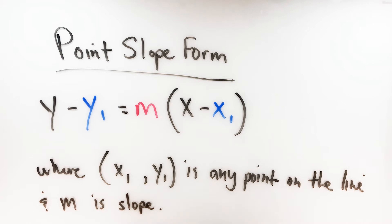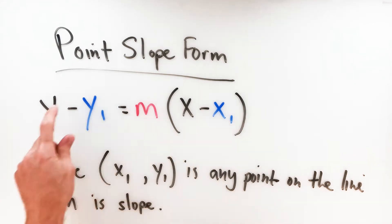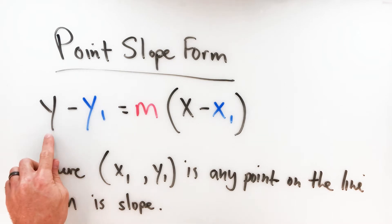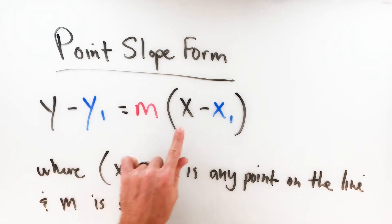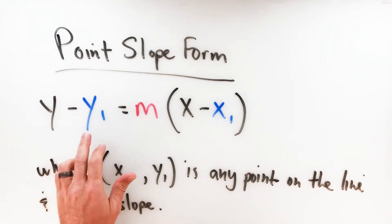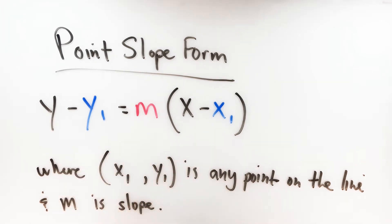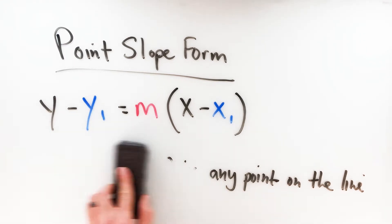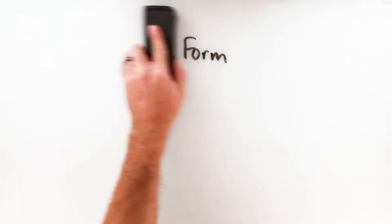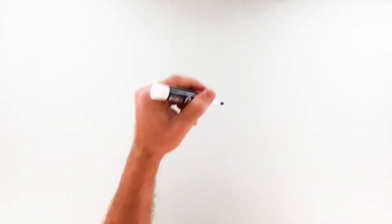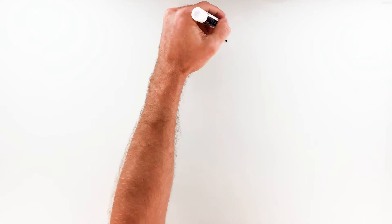So if you have a point on the line and the slope, you can write the equation of the line in point-slope form. The y and x will remain as y and x, but these three spots — the ones that are color coded — will be replaced with actual numbers. Let me give you a quick example so you can see how simple this really is. I'll write my point-slope form up here just to have it accessible: y minus y sub 1 equals m times x minus x sub 1.